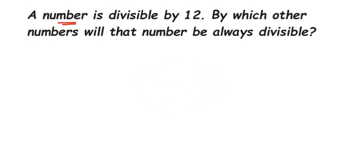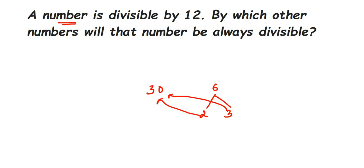Similarly, let's take another example with a bigger number. Let's say 30 is our number, and 30 is divisible by 6. So by which other numbers can it be divided? If we take the factors of 6 — which are 2 and 3 — we can see that 2 can also divide 30, and 3 can also divide 30.